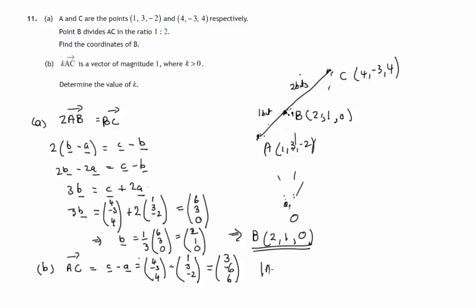Now the magnitude of that vector. Remember the magnitude: you square root and you square each of them and add the results. So square root of 3² plus (-6)² plus 6². That's the square root of 9 plus 36 plus 36. 36 plus 36 is 72, plus 9 is 81. Square root of 81 is 9. So the magnitude of AC is 9. And if we're wanting the magnitude to be equal to 1 after we've multiplied by some number, then that number will have to be 1/9, because 1/9 times 9 will give you 1. So K is 1/9.